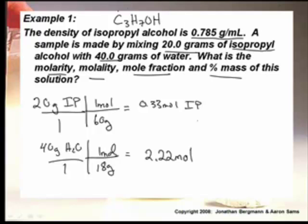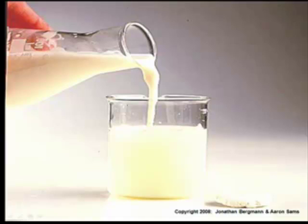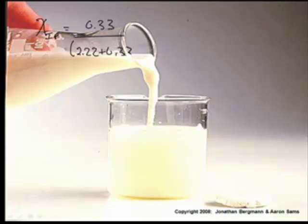Now that we have the moles, we can do quite a number of things. Let's do the mole fraction first - something that's sort of new for you guys. The mole fraction is the moles of isopropyl alcohol, which is 0.33, divided by the total number of moles: 2.22 plus 0.33. That gives us 0.13. There are no units in mole fraction, so that is the answer.